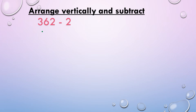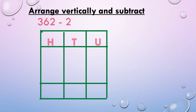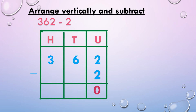Next, 362 minus 2. We draw the columns and write the place values: hundreds, tens, and units. We arrange the numbers: 362, then 2. We put the minus sign and subtract from units place. 2 minus 2, we get 0. 6 minus 0 is 6. 3 minus 0 is 3. So 362 minus 2, we get 360.